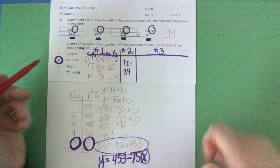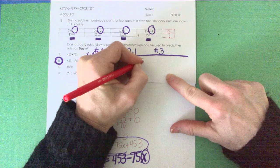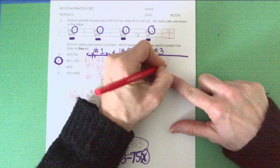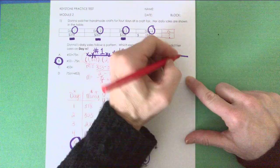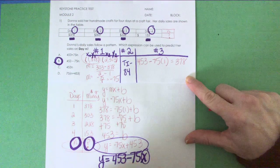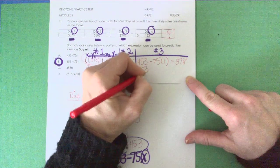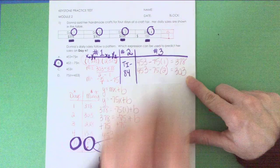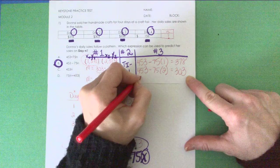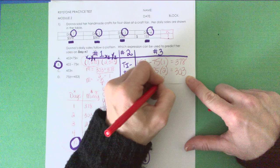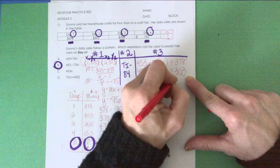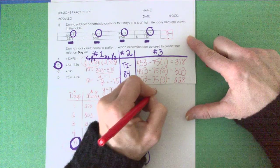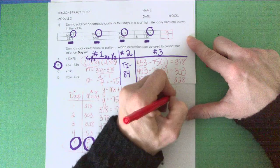Let me show you what I mean. If I take letter B and I press in 453 minus 75 times 1, I get 378. If I take my calculator and press in 453 minus 75 times 2, bingo, I get 303. If I put 453 minus 75 times 3 days, I get 228. And finally, 453 minus 75 times day 4, I get 153.